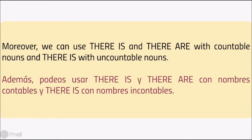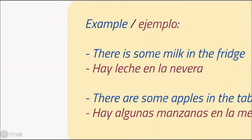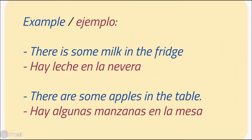Note: We can use 'there is' and 'there are' with countable nouns, and 'there is' with uncountable nouns. Example: There is some milk in the fridge. There are some apples on the table.